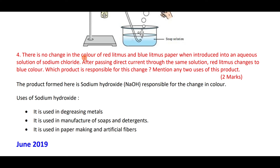When an aqueous solution of sodium chloride is introduced to litmus paper, there is no color change. But after passing direct current, red litmus changes to blue. The product responsible for this change is sodium hydroxide. Sodium hydroxide is formed during the electrolysis of sodium chloride solution.